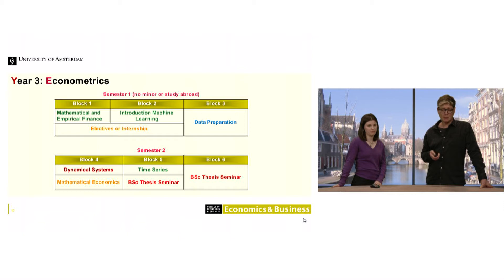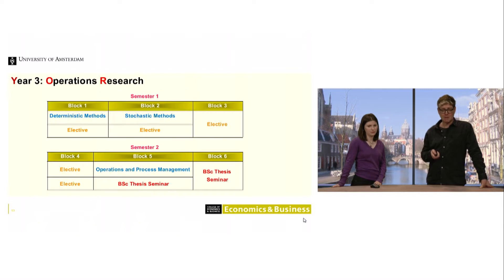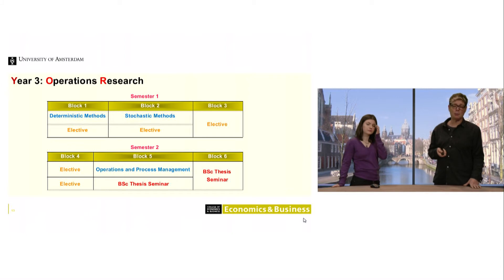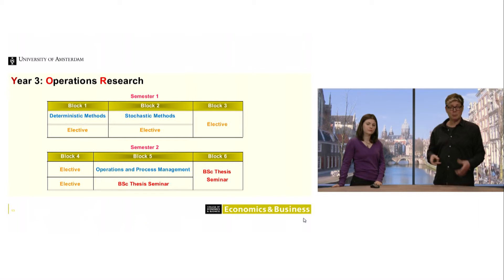In the second semester, a big part is devoted to the thesis. This year you can still opt for Operations Research — these are typical OR courses — but again you can choose from a set of electives, and of course pick them from the Econometrics part as well.